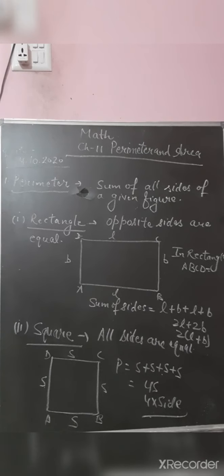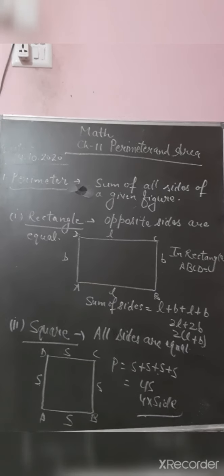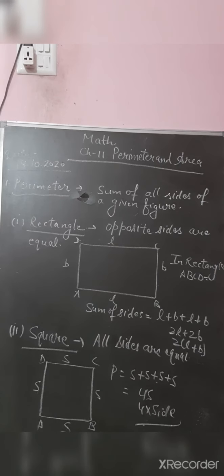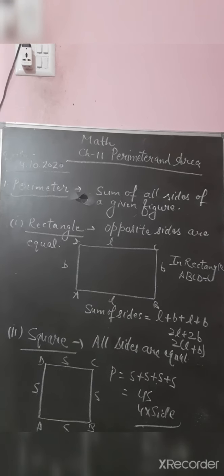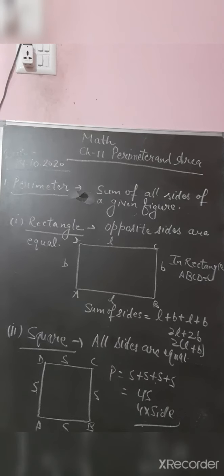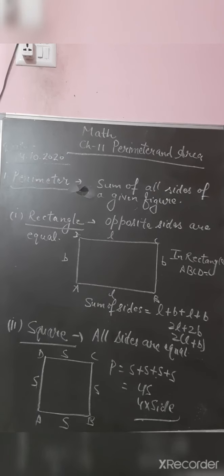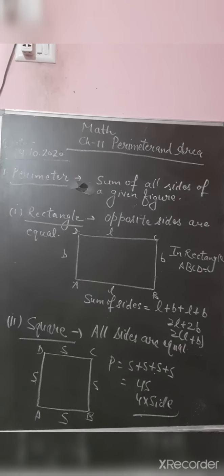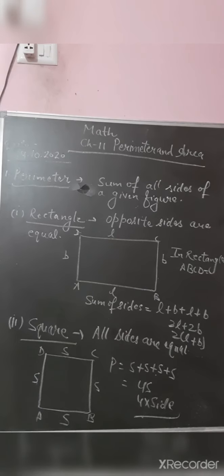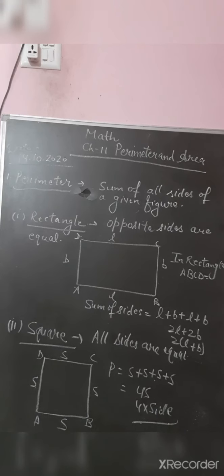Before discussing these concepts, I will give you one example. Suppose you live nearby a park and you walk around the park on a daily basis. Can you answer the following questions: What is the perimeter of the park? What is the area of the park? And how will you find out the area of a particular region? You cannot answer these yet — in this chapter we will be learning how to find out the perimeter and area of regular and irregular shapes.